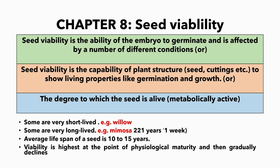Seed viability is the ability of the embryo to germinate and is affected by a number of different conditions. It is the capacity of a plant structure to show living properties like germination and growth — the degree to which a seed is alive, that is, metabolically active. These are the few definitions of seed viability.